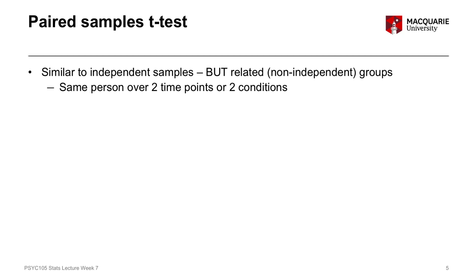The first and probably most common scenario, particularly in psychology and health sciences, is looking at the same person's score across two different time points or conditions. For example, to test the effect of an intervention, we could measure someone's anxiety score before the intervention and then after the intervention. We get two scores from the same person — it's not separate people, it's the same person under two different time points.